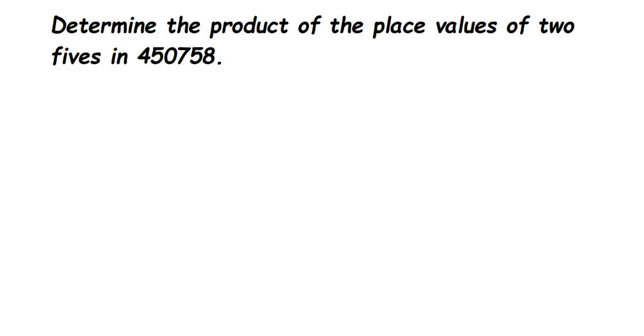Hello everyone, here's a question: determine the product of the place values of two fives in this given number. We have five lakh fifty thousand seven hundred fifty eight, and there are two fives - one is in the tenth place, one is in the ten thousands place. We have to find out their product, and before that we have to first find out their place values. Once we have found the place values of both fives, then we have to find out the product - product means to multiply them.